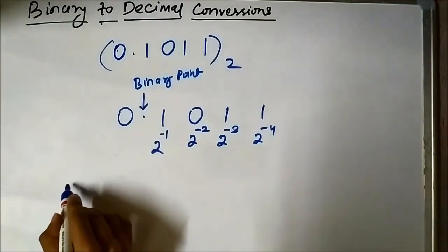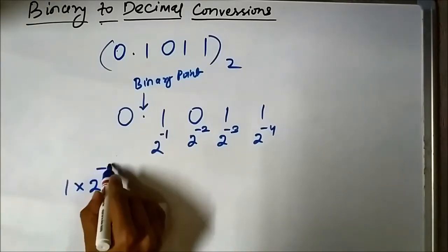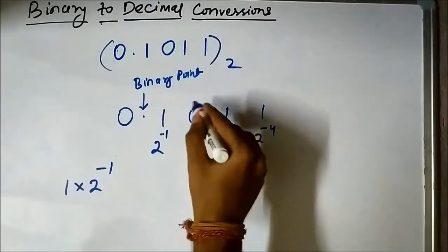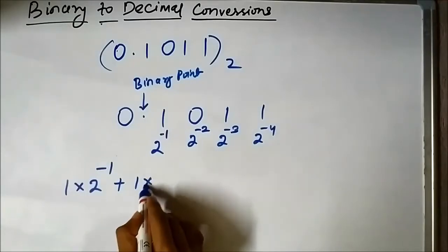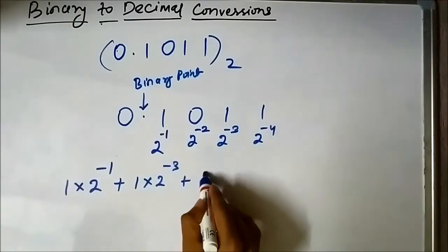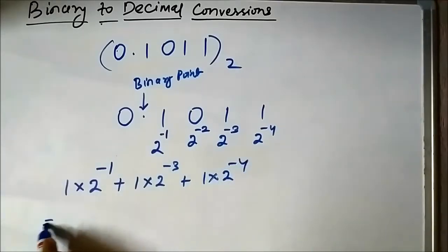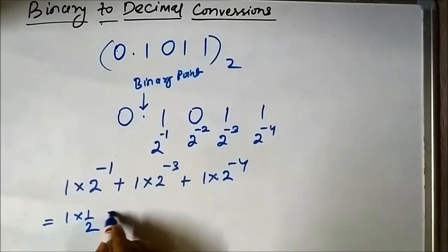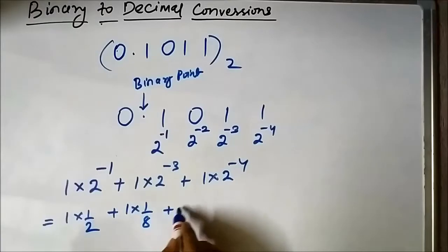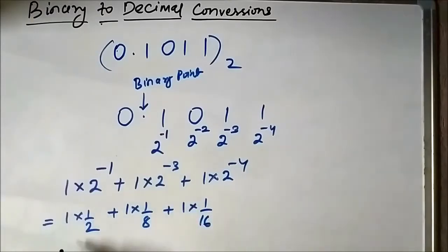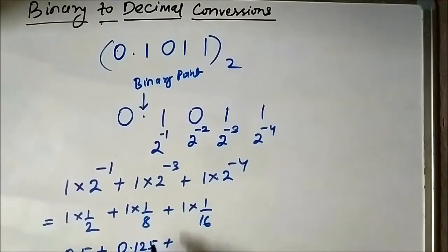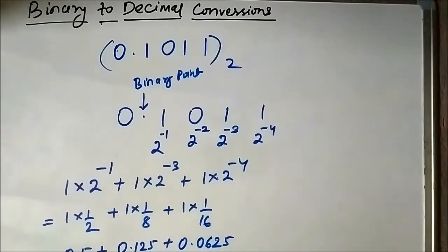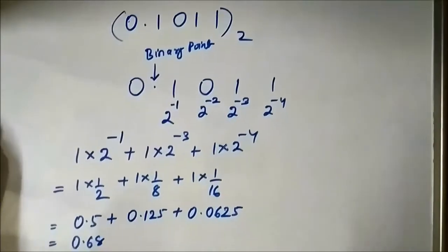For 0.1011, we include only those bits that are 1: 1 × 2⁻¹ + 1 × 2⁻³ + 1 × 2⁻⁴, which equals 1 × 1/2 + 1 × 1/8 + 1 × 1/16, giving us 0.5 + 0.125 + 0.0625 = 0.6875.